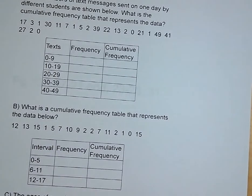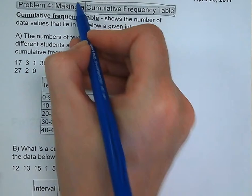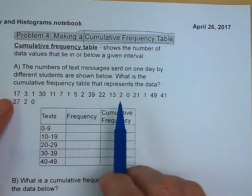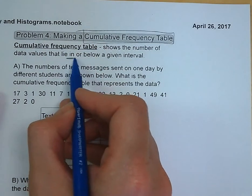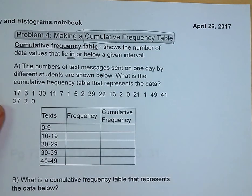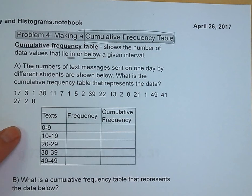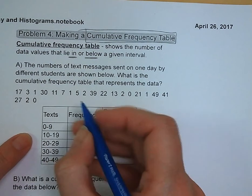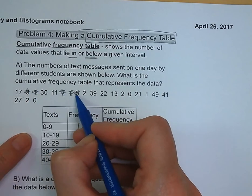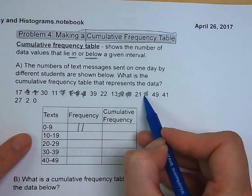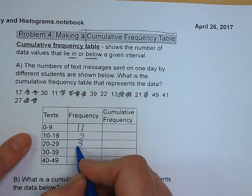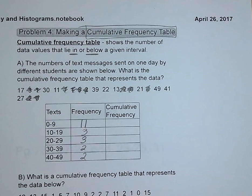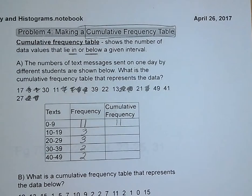Problem number four, making a cumulative frequency table. So what does the word cumulative mean? Adding everything together. A cumulative frequency table shows the number of data values that lie in or below a given interval. We've got the number of text messages being sent on one day. In the interval of zero to nine texts, there are 11 students. In the 10 to 19, we've got three students. 20 to 29, three students. 30 to 39 is three, and 40 to 49 is two.